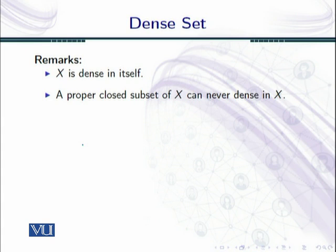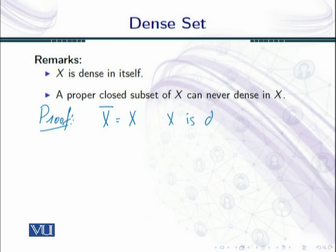Finally, we have some remarks. The first remark is: the set X is dense in itself. The second remark is: a proper closed subset of X can never be dense in X. Let us see the proof of these remarks. For the first remark, the closure of X in X is X, so X is dense in X.